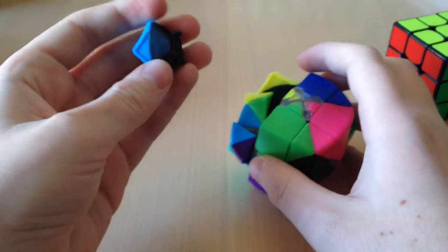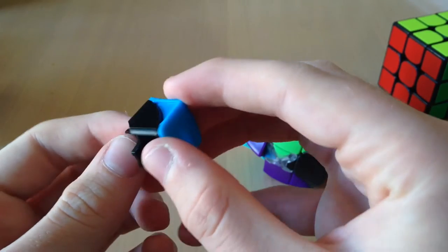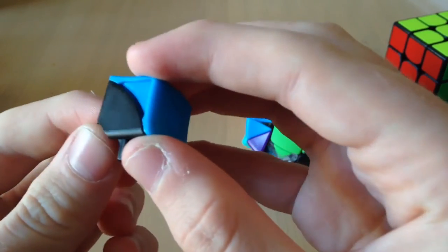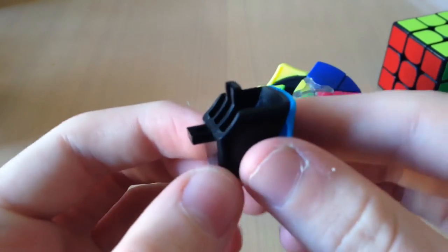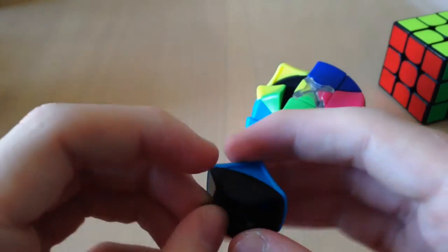Taking the cube apart, you can see that the mechanism is very blocky and basic. You can see this, sorry about the lighting. You can see here that the cube is very blocky. The plastic is really thin but it's not cheap at all.